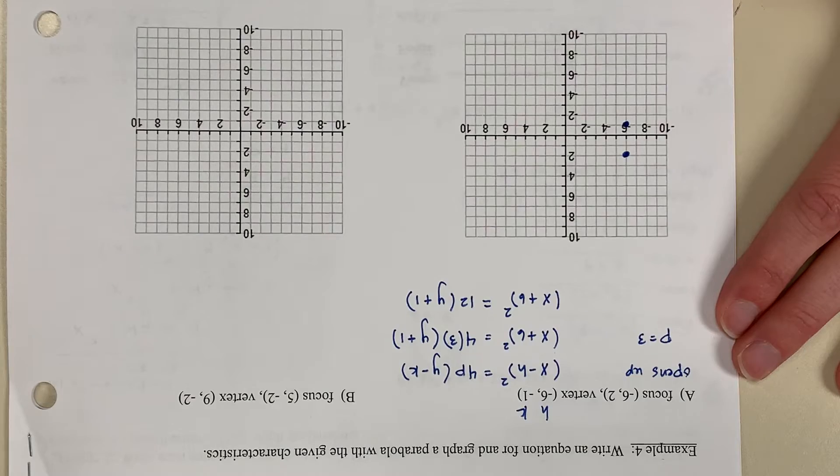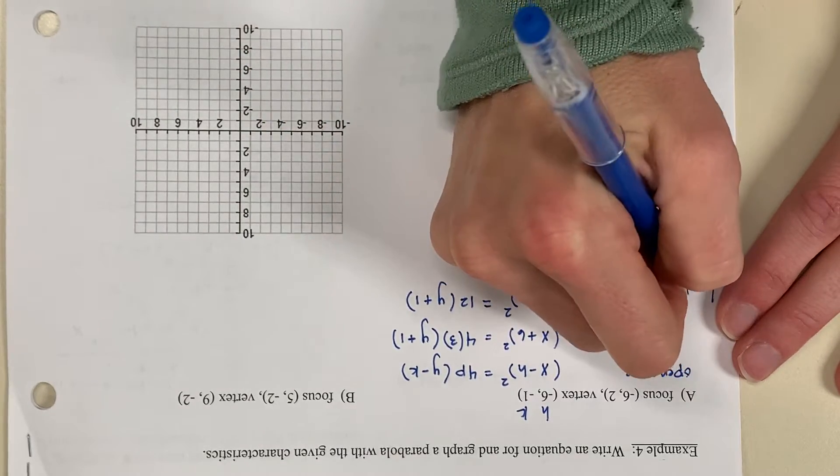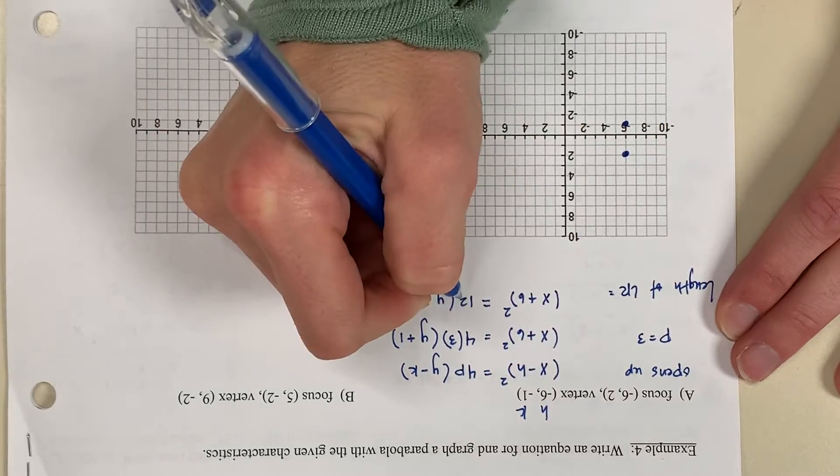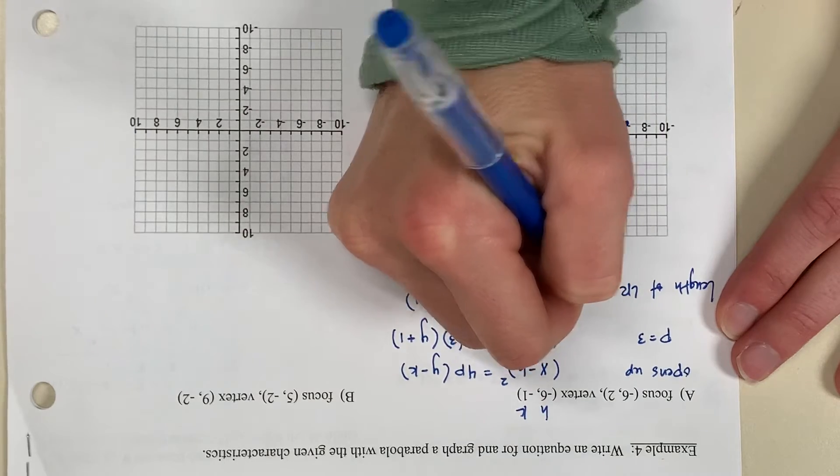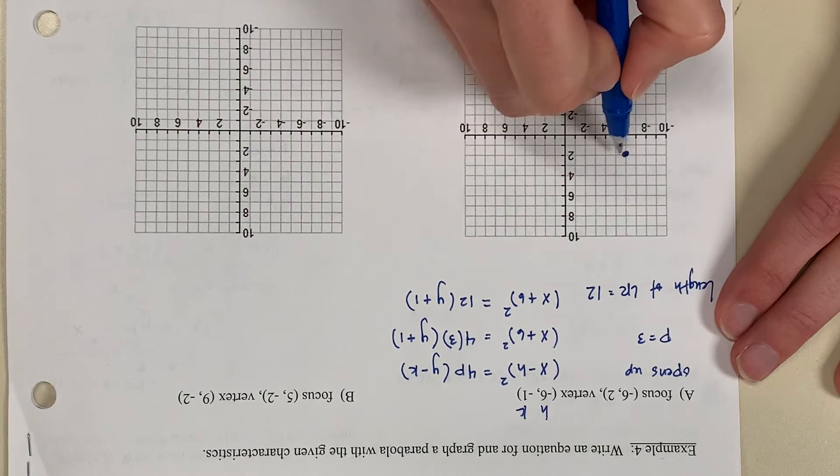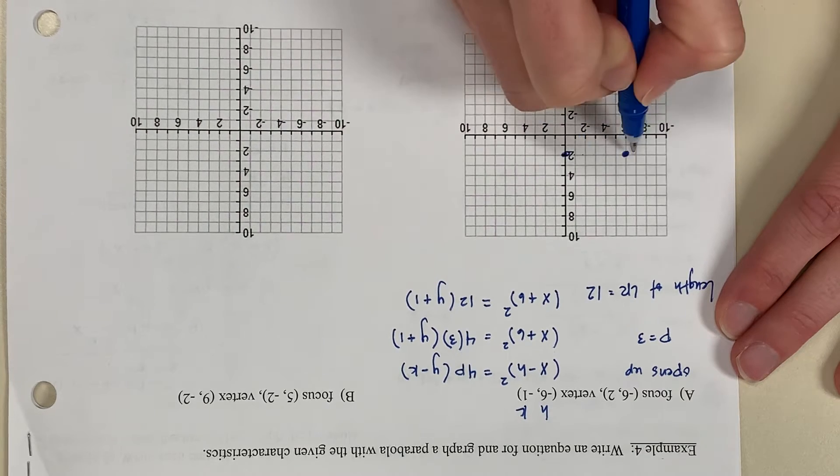Now the length of the LR is the absolute value of 4p. The absolute value of 4p is the absolute value of 12. That is equal to 12. Okay, that means half of 12 is 6. So from my focus, I count right 6 and I count left 6.